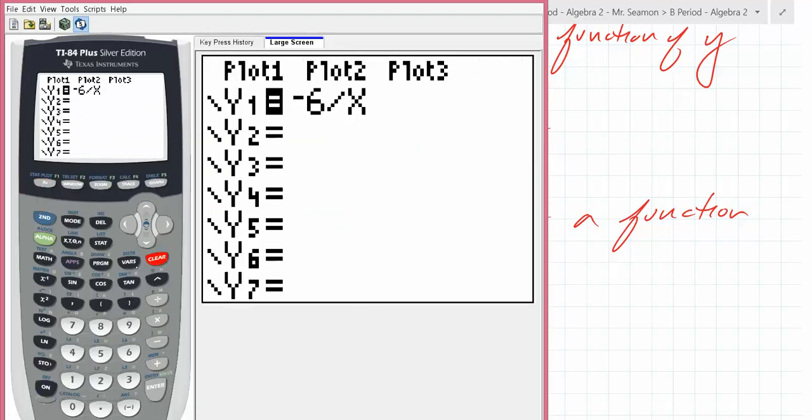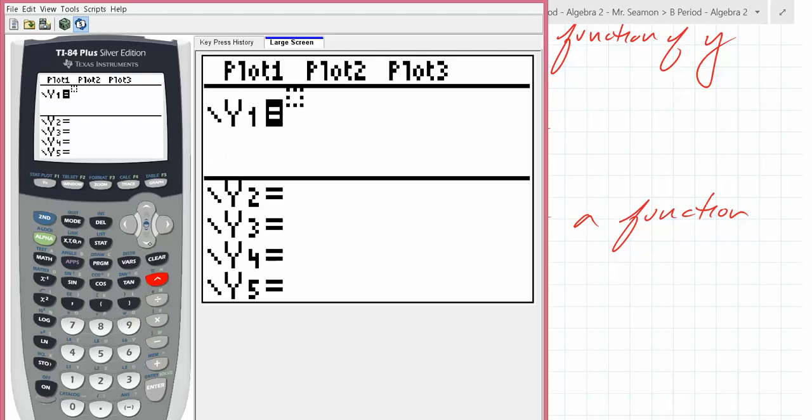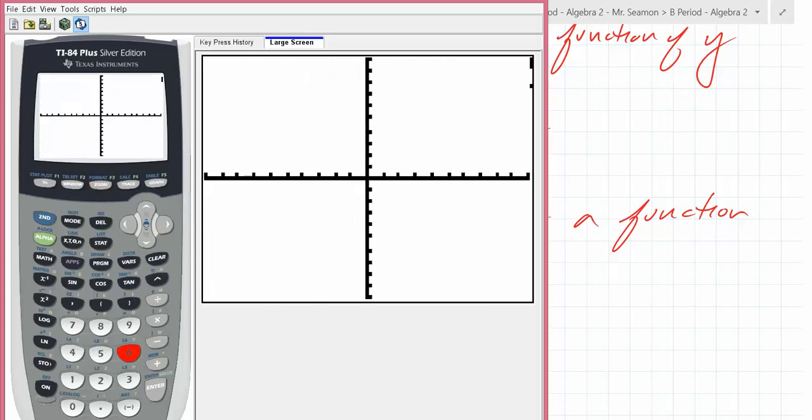So Y equals, do you think this is going to be a steep function or like a really shallow function? What do you think? Anybody want to guess? Look, do the numbers get big? Do the numbers get big or small really quick? They get big really quick, right? So it's going to be pretty steep. So if I zoom standard here, if I zoom six, zoom standard, it's going to get steep really quickly. You see that?